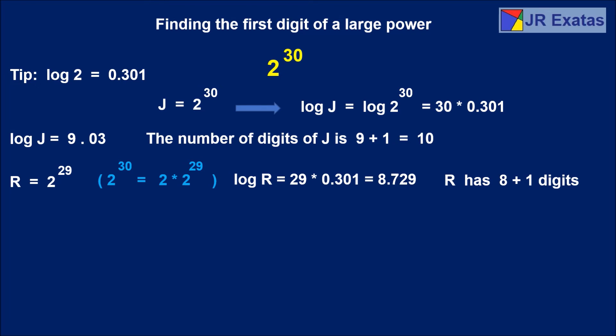So the first digit of R must be in the set 5, 6, 7, 8, 9. Multiplying each of these numbers by 2 we get these possibilities.